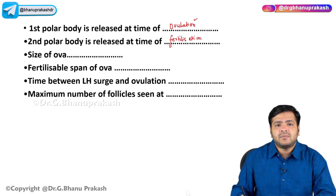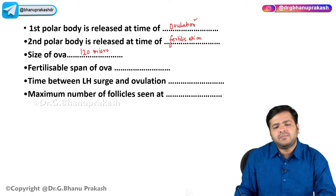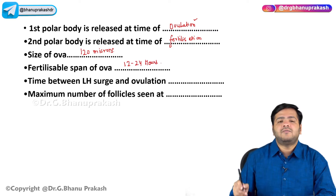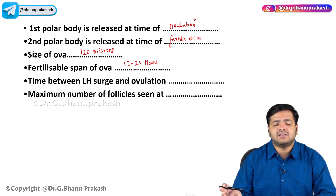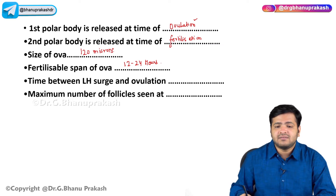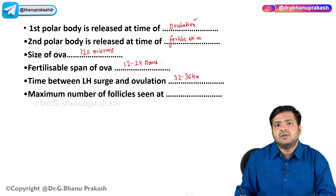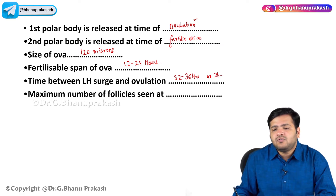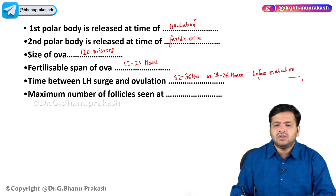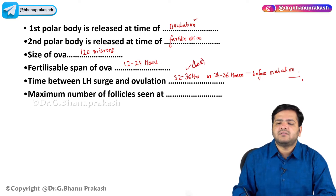The size of the ovum is 120 microns — the largest cell in the human body. The fertilizable span of the ovum or secondary oocyte is around 12 to 24 hours. The time between LH surge and ovulation is 32 to 36 hours — that is the best answer; some books write 24 to 36 hours.